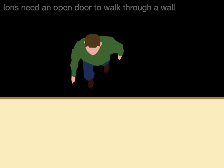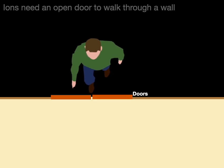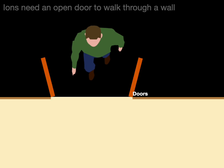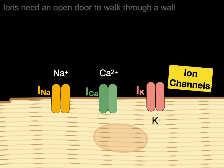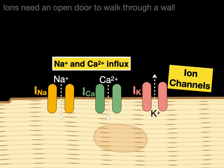But ions need an open door to walk through a wall. Ions, because they're charged, cannot diffuse through the wall — they can't walk through the wall. So we put in doors. Those doors are called ion channels. But ions cannot go through the channels unless the doors are open. Sodium and calcium have an influx — high concentration outside — they go through the open doors to the inside of the cell. For potassium, we have an efflux — high potassium inside diffuses down its gradient to move out of the cell.